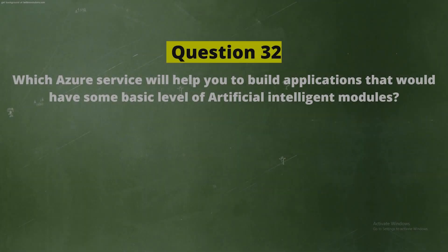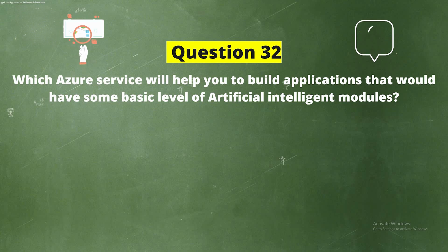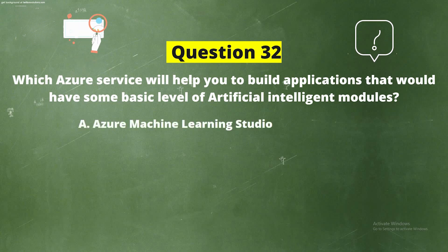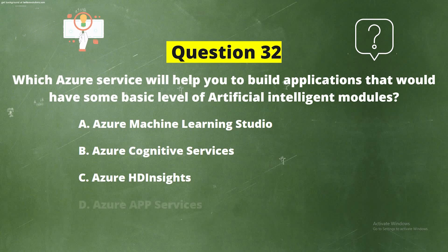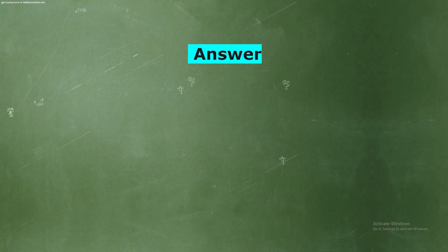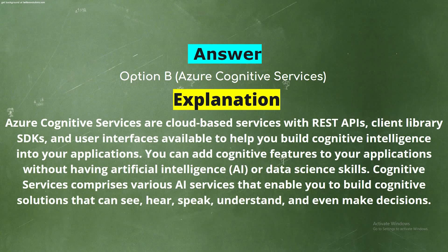Question 32: Which Azure service will help you to build applications that would have some basic level of artificial intelligence modules? The options are: Option A, Azure Machine Learning Studio; Option B, Azure Cognitive Services; Option C, Azure HD Insights; Option D, Azure App Services. The correct answer is Option B, Azure Cognitive Services.